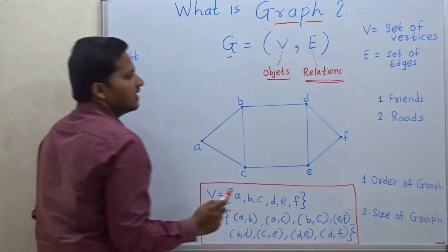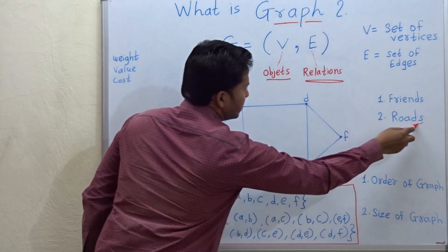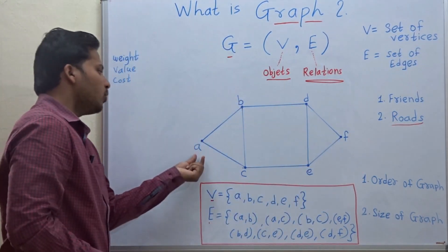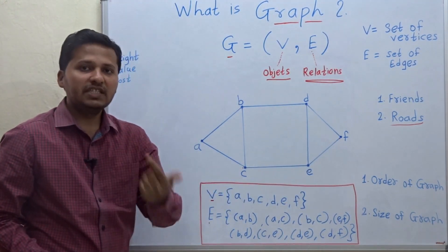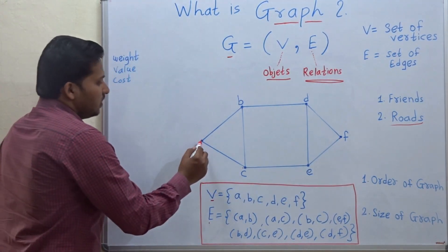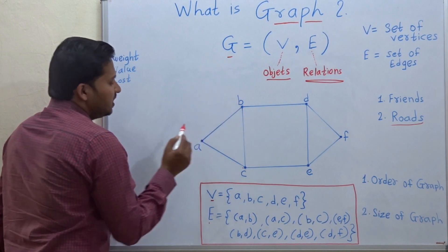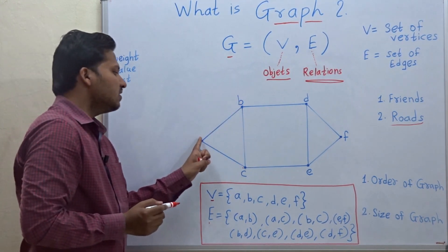Now let's take another example of roads. So suppose a, b, c, d, e, f are the names of cities. So the edge between a and b tells us that there is a road available between a and b.